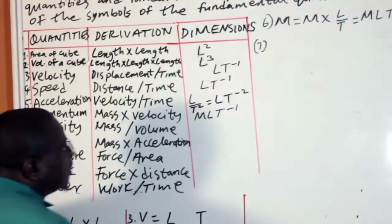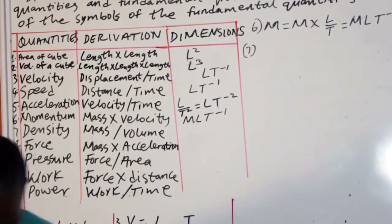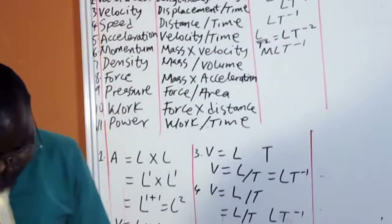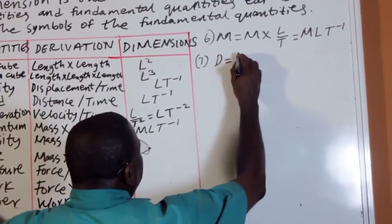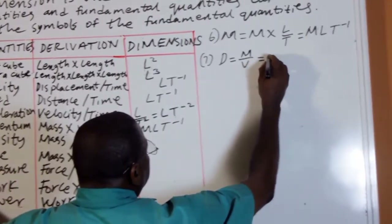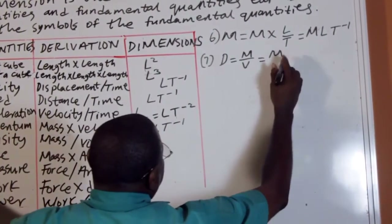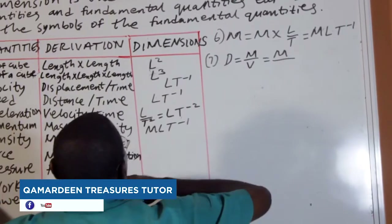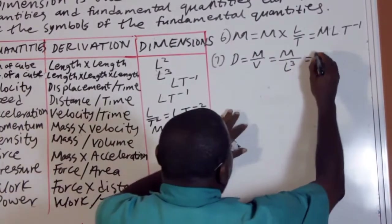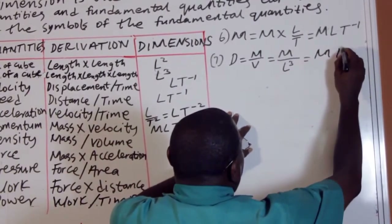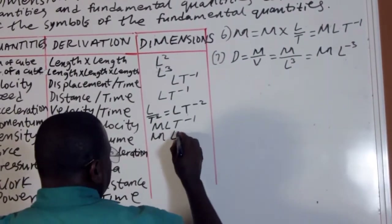Number 7 is density. Density is mass over volume. The symbol of the fundamental quantity of mass is M, and the symbol of volume is L raised to power 3. So density gives us M times L raised to power minus 3, so density is ML raised to power minus 3.